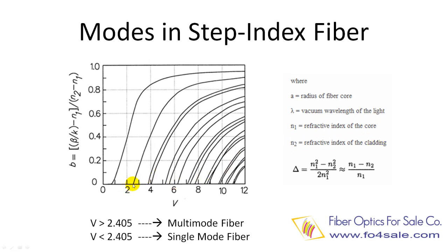From the graph, we can see when V number is less than 2.405, only one fundamental mode can exist. This is called single mode fiber. When V number is larger than 2.405, multiple modes can exist. This is called multi-mode fiber. The larger the V number, the more modes can propagate within the fiber.